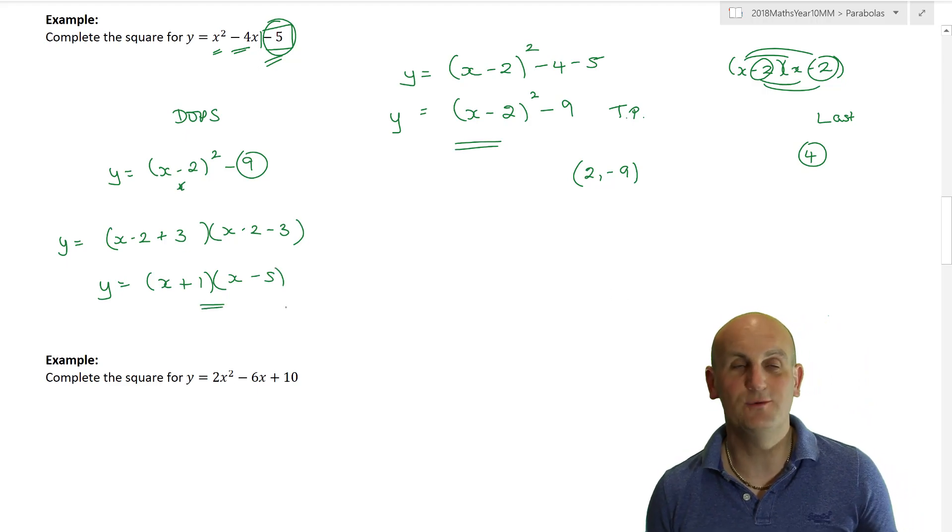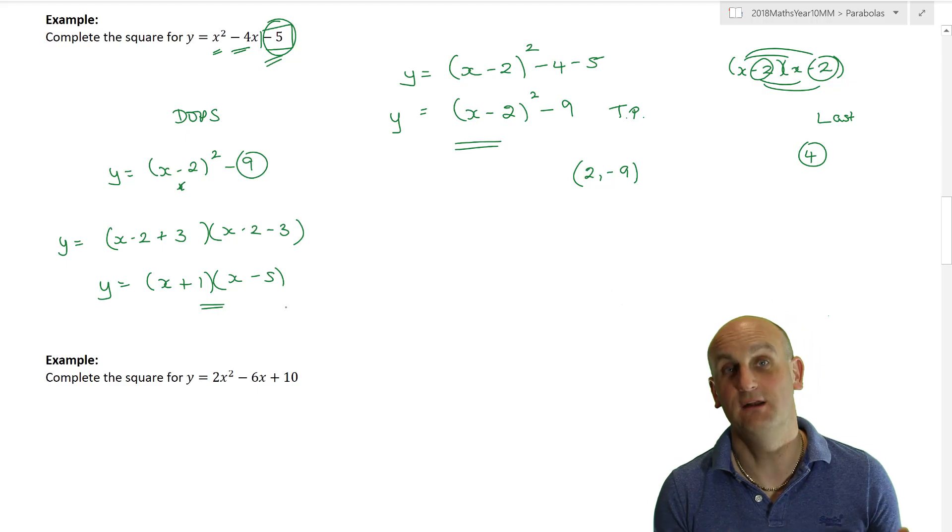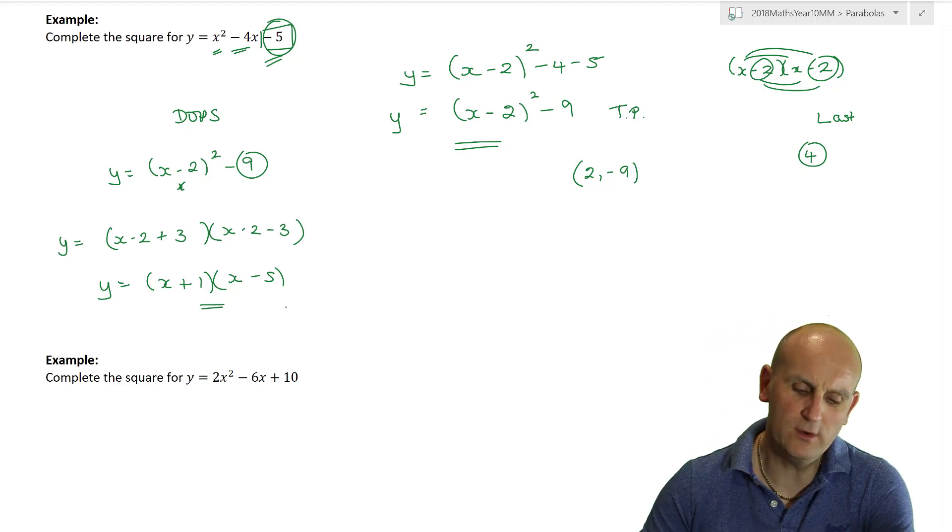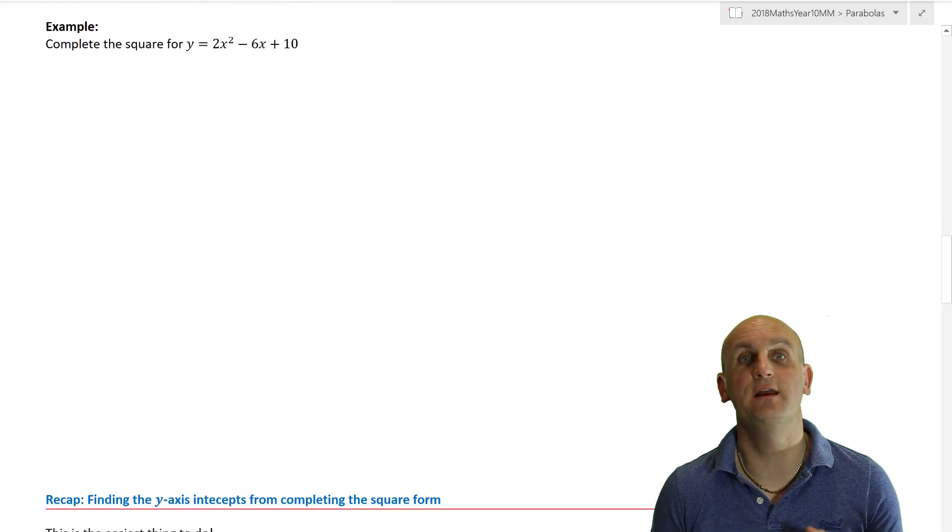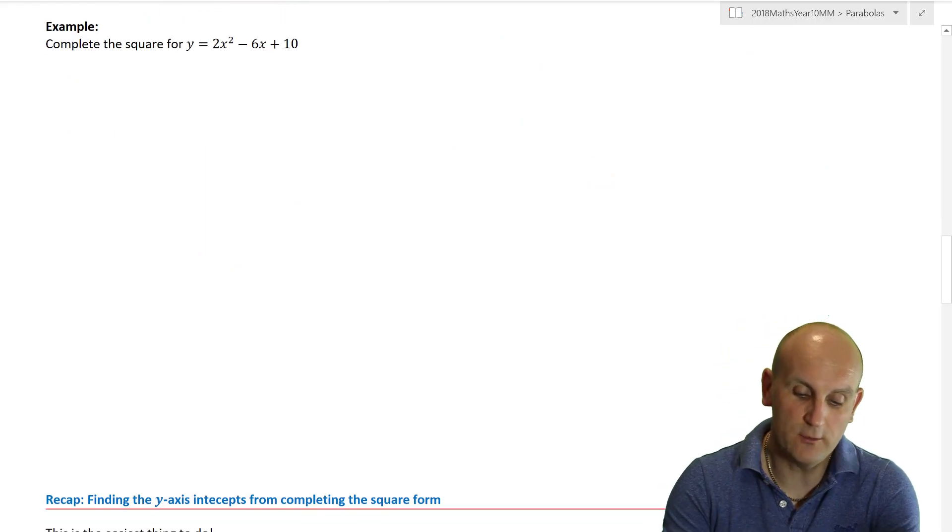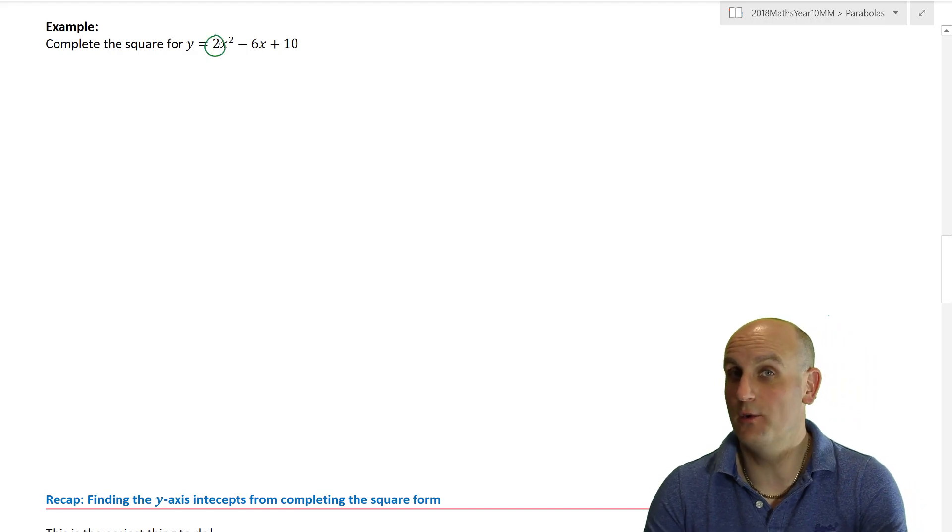So the great thing is I now know that I can write two sets of brackets. This first thing always goes in the front here, x minus 2 and x minus 2. And then the square root of 9, which is 3, I put a plus 3 and I put a minus 3. So that now leaves me with something quite pretty really, where y gives me minus 2 plus 3 gives me x plus 1 and x minus 5.